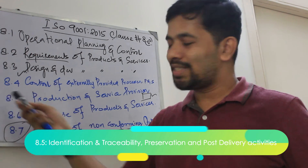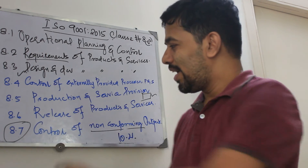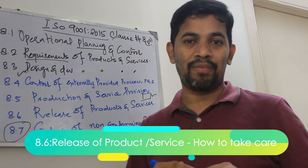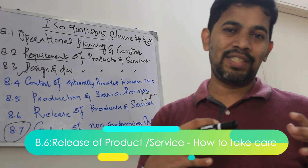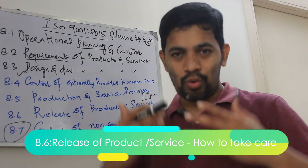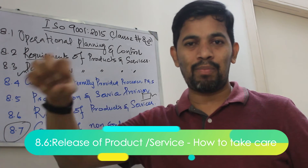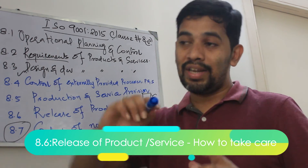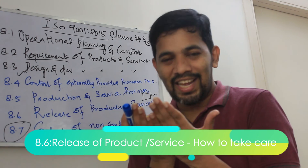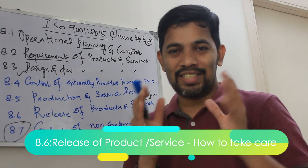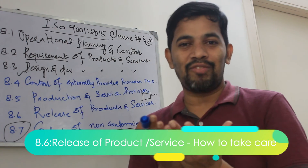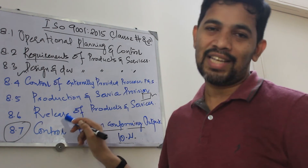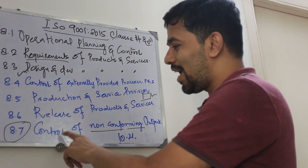8.6 is release of product. Even when you are releasing through an external party who can ship that product, it will still be under your control. You need to ensure that until the product reaches the hand of the customer, you are liable — you need to take responsibility. That's what this class stresses about.